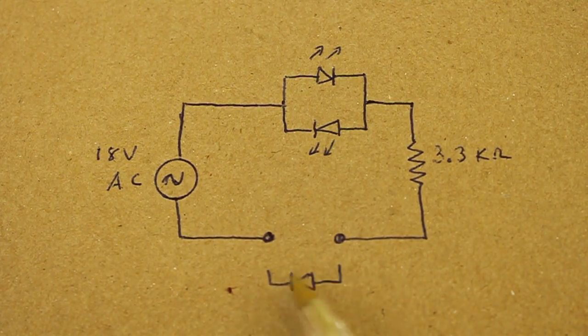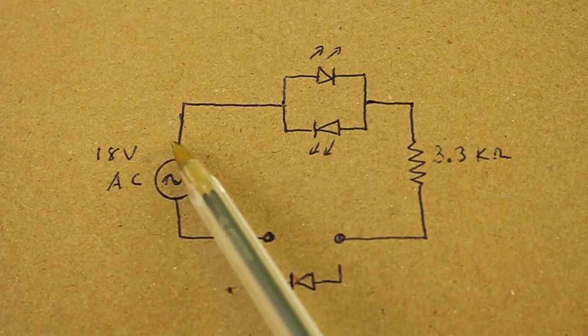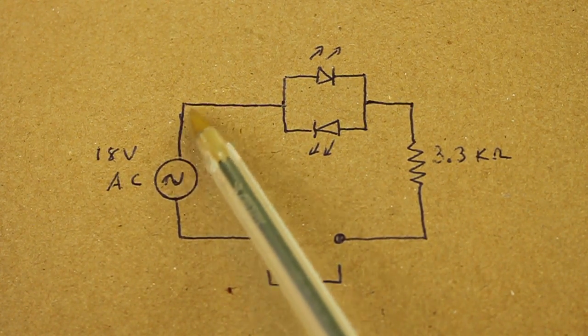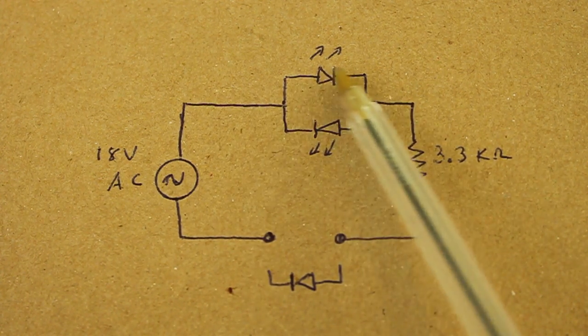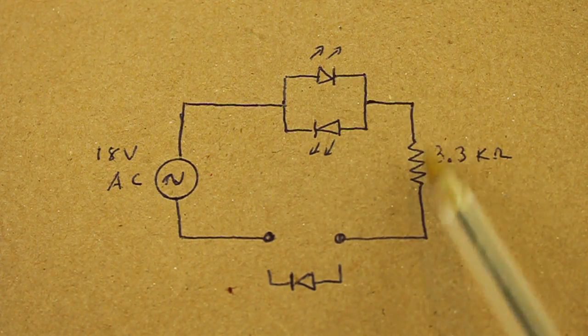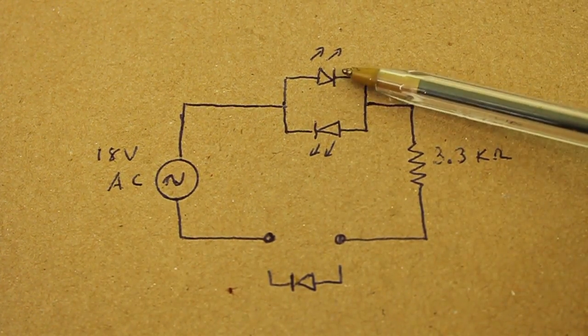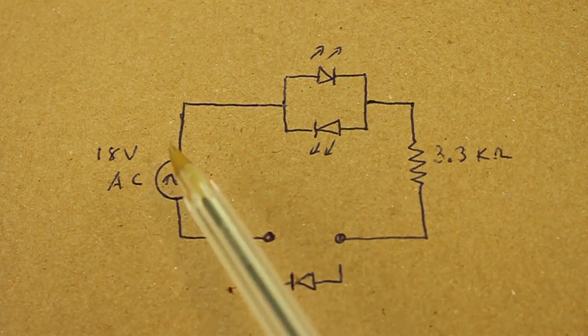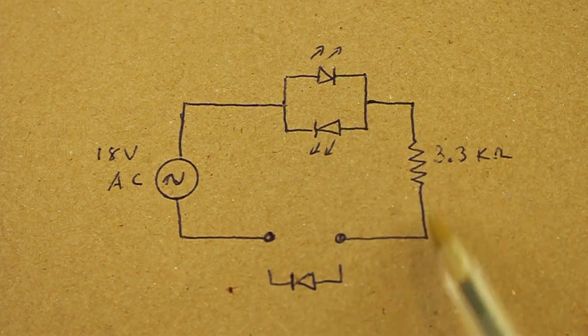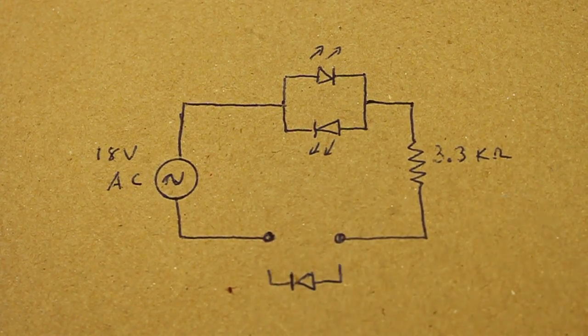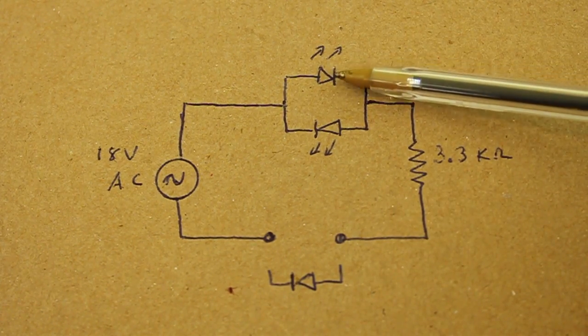Now, if the diode is in good condition, then through the positive cycle of the AC, you have positive here, then the current will flow through this LED, which is correctly polarized, through the resistor, through our diode, and it will turn on. On the negative cycle, the current can flow through this other LED, but not through our diode. So, for a good diode, only this LED will turn on.